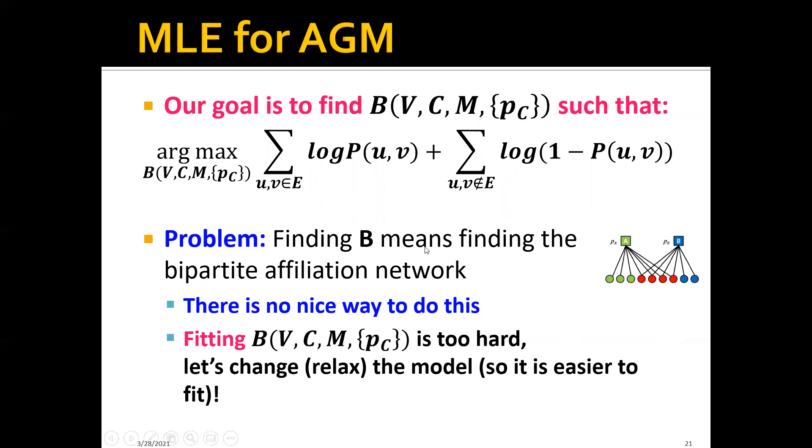Because finding the full set actually means finding the bipartite affiliation network. This is actually a difficult combinatorial optimization problem, and there's no nice way of doing this.